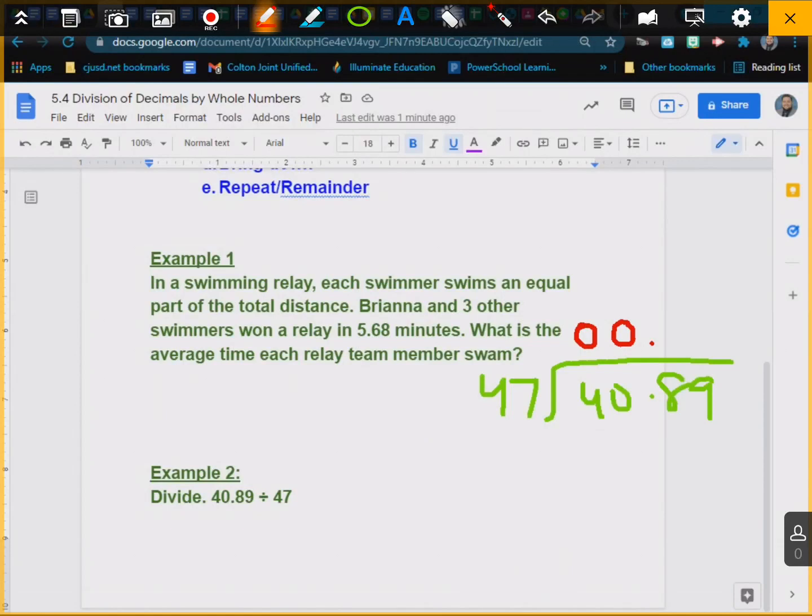Well, how many times does it go into 408? This is where we estimate, you guys. Estimate. 47 is close to 50. Yes? So I know 50 goes into 400 about 8 times, because 50 times 8 is 400. Okay?